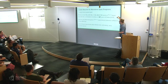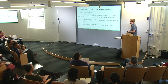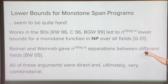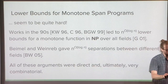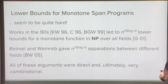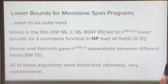Works in the '90s led to n-to-the-log-n lower bounds, but just for some strange monotone function in NP — that was sort of an artifact of the method. Later, Bmul and Vineriv were able to take these techniques and use them to give sqrt-log-n separations between span programs over different fields. All of these arguments were very direct and ultimately combinatorial — they dealt with looking at a span program, coming up with a combinatorial object that obstructed the existence of a small span program, and then more or less directly constructing that.